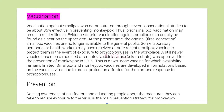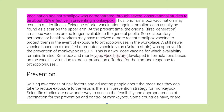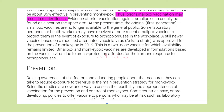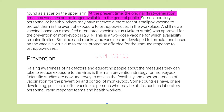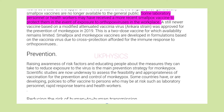Vaccination: Vaccination against smallpox was demonstrated through several observational studies to be about 85% effective in preventing monkeypox. Thus, prior smallpox vaccination may result in milder illness. Evidence of prior vaccination can usually be found as a scar on the upper arm. At the present time, the original first-generation smallpox vaccines are no longer available to the general public. Some laboratory personnel or health workers may have received a more recent smallpox vaccine to protect them in the event of exposure to orthopox viruses in the workplace.